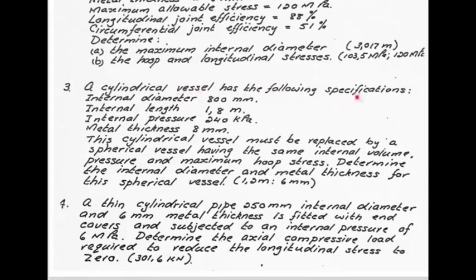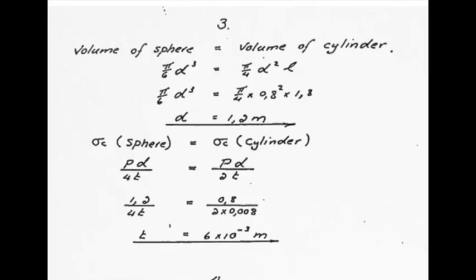In problem three, a cylindrical vessel must be replaced with a spherical vessel of the same internal volume. First find the required internal diameter of the sphere by equating the cylinder volume (cross-sectional area times length) to the sphere volume (pi·d³/6), solving for d = 1.2 m. Then set the maximum stress in the cylinder (pd/2t) equal to the sphere stress (pd/4t). A spherical vessel only ever has pd/4t — the lesser stress — so it requires a thinner wall than the cylindrical vessel.